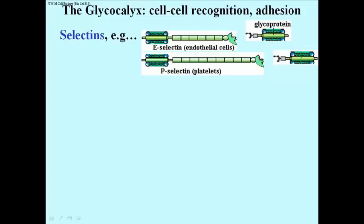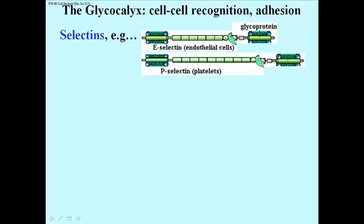One group of these proteins are called the selectins. They have the word lectin in them. The selectins — there are a couple of them here: E-selectin, which is found in endothelial cells, and P-selectin, which is found in platelets. If you look at the right side of these molecules, you will see in the animation that they are going to bind the glycoproteins in other cells.